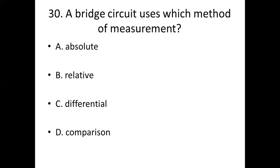30th bit. The bridge circuit uses which method of measurement? Option A: absolute. Option B: relative. Option C: differential. Option D: compression.